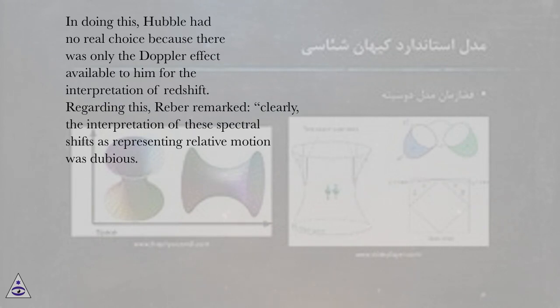Regarding this, Raber remarked, clearly, the interpretation of these spectral shifts as representing relative motion was dubious.